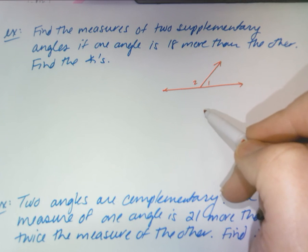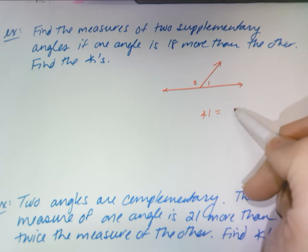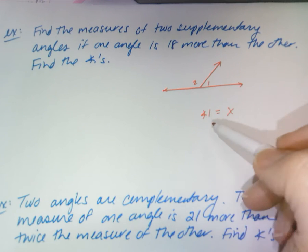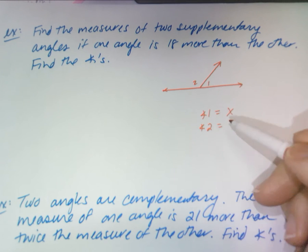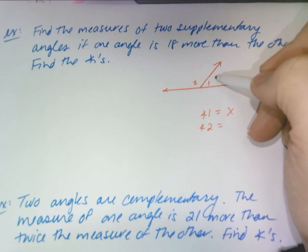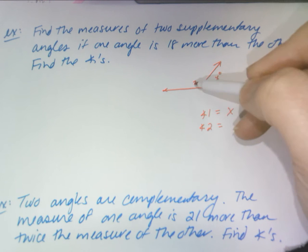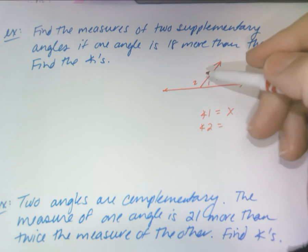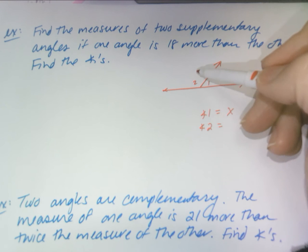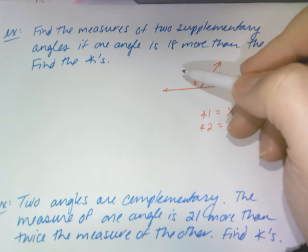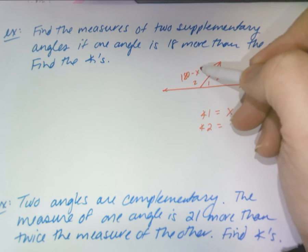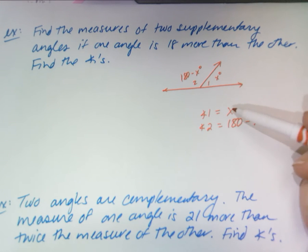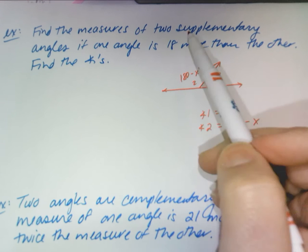Okay, I'm going to call angle one X and then I'm going to call angle two its supplement. So let's think about that. If this was 10 degrees, this would be 170. If this was 20 degrees, this would be 160. What am I doing? I'm taking X and taking it away from 180. So you always give one of them X and the other one 180 minus X if it's supplementary.